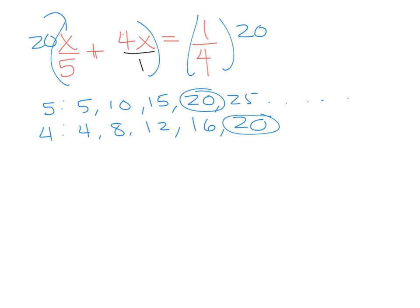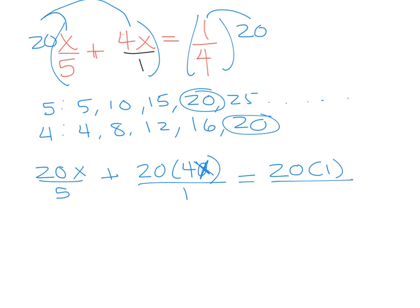So you're going to have to take 20 times x divided by 5. You're going to have to take 20 times 4x divided by 1. And then you're going to have to take 20 times 1 divided by 4.